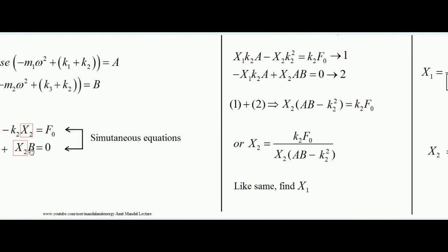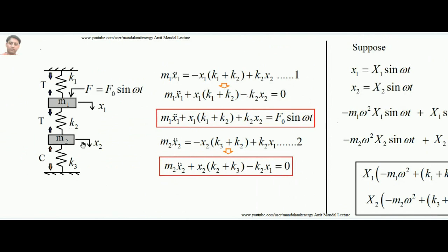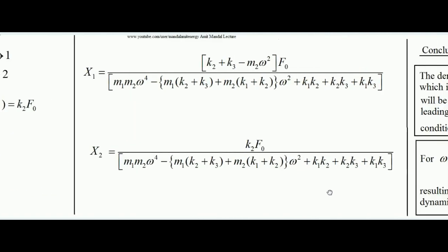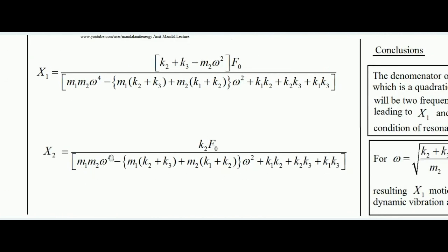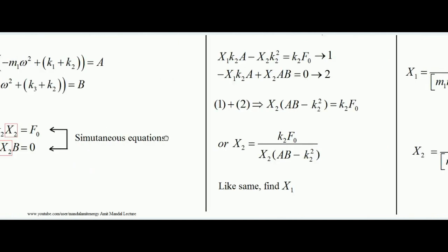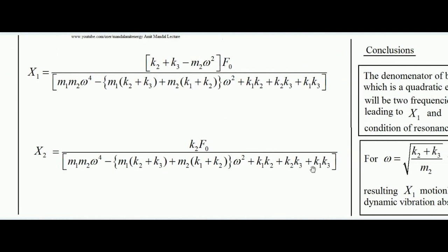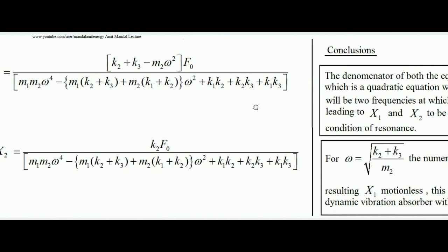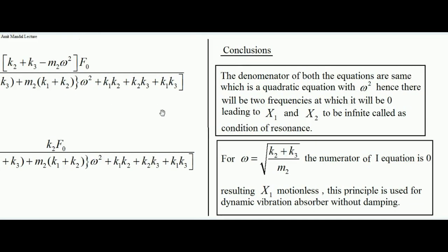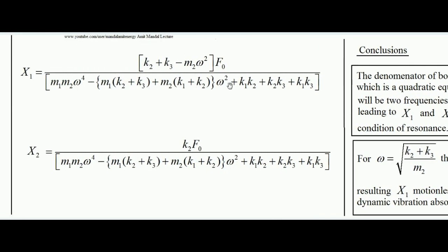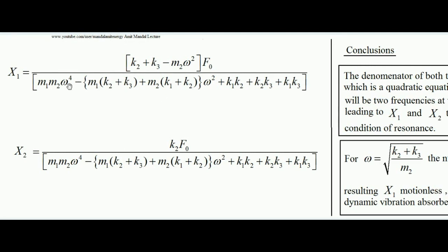Substituting back the expressions for A and B and expanding, the amplitude of the second mass is: X2 = k2·F₀ / [m1·m2·ω⁴ - (m1·(k2+k3) + m2·(k1+k2))·ω² + (k1·k2 + k2·k3 + k1·k3)]. Similarly, X1 = [(k2+k3 - m2·ω²)·F₀] / [same denominator]. Note that both expressions share the same denominator, which is a quadratic equation in ω².